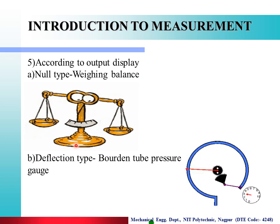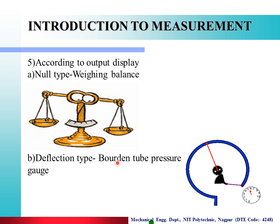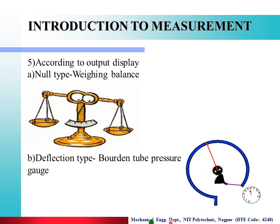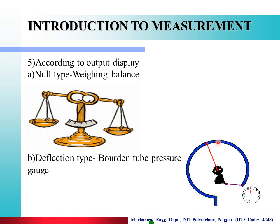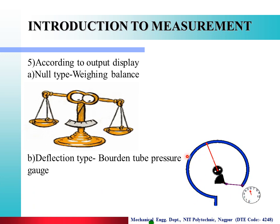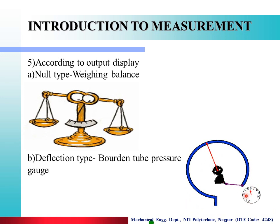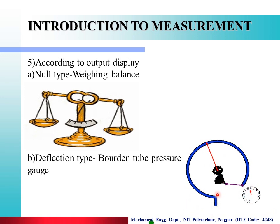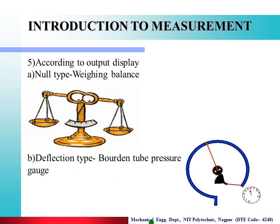The next type is deflection type instrument. Example: Bourdon tube pressure gauge. When measuring gas pressure, the pointer deflects over the scale. Until the pointer deflects on the scale, the gas pressure is not known. That is called a deflection type instrument.